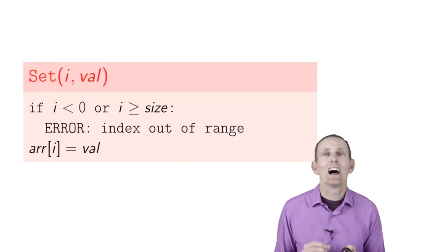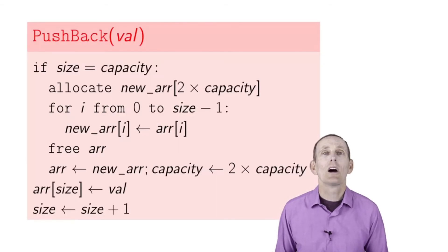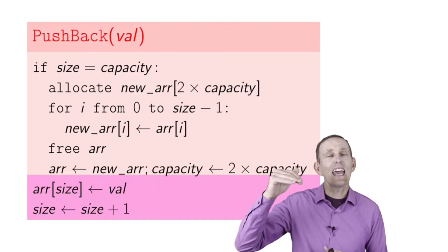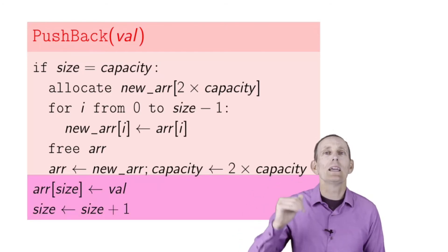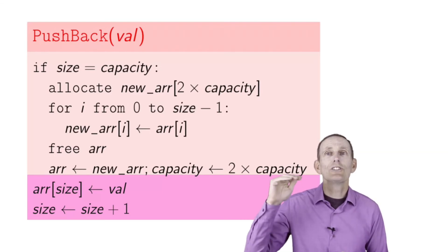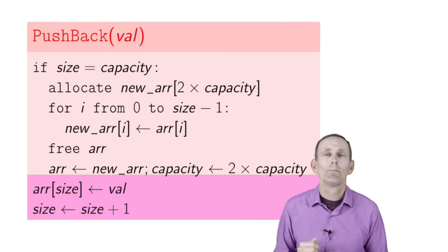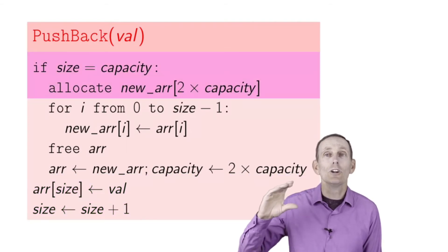Pushback is a little more complicated. Let's skip the if statement for now and just say there is empty space in our dynamic array. In that case, we just set array at size to val and then increment size.